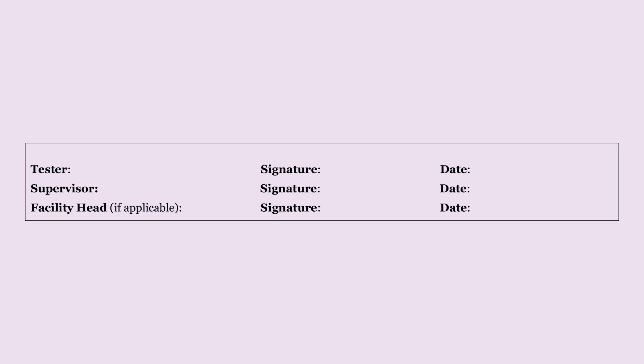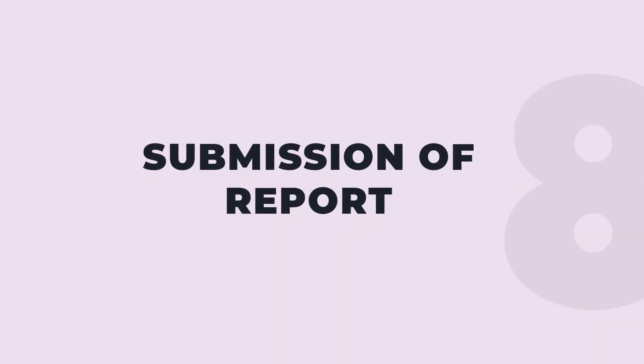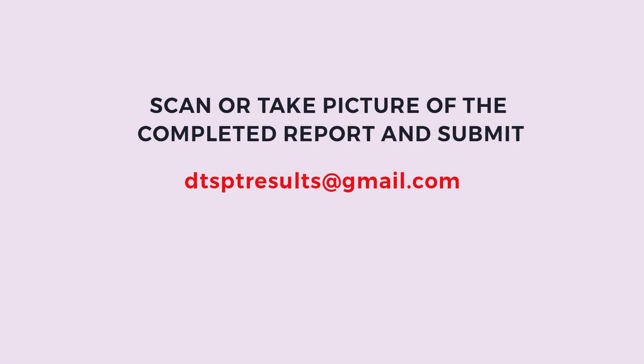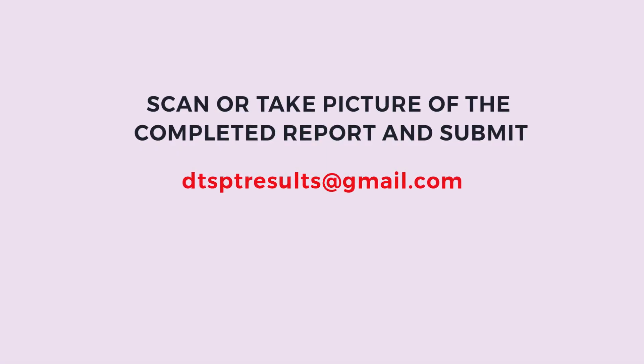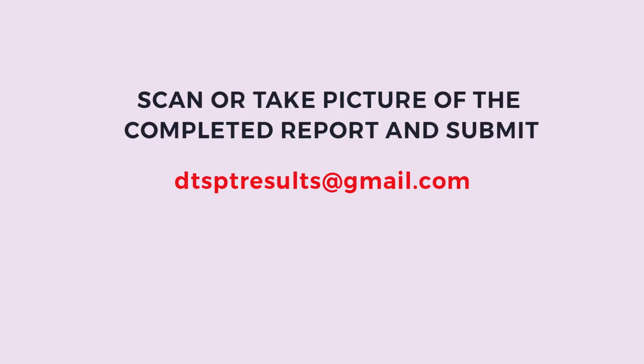In the third section, testers should indicate their full name and sign, and write the date when the forms were filled. Supervisors should also write their name, sign, and provide the date. If your facility head is available, they should also write their full name, sign, and write the date. Scan or take a picture of the form and submit to the provided email address. Your district HIV coordinator will collect the hard copy. Thank you.